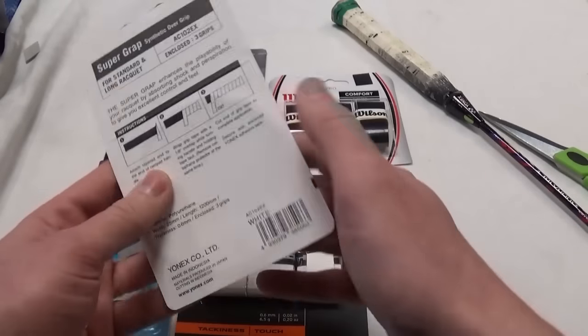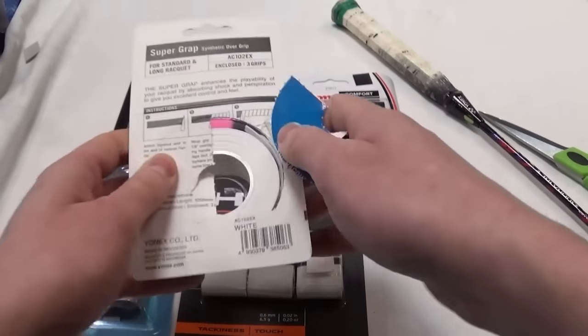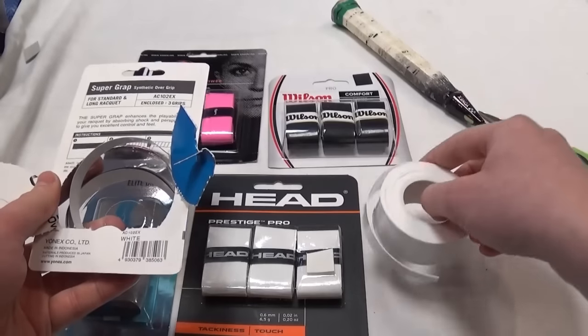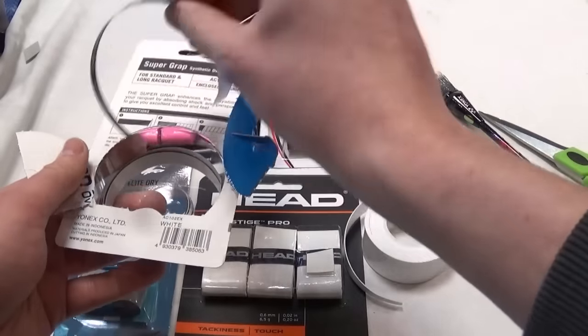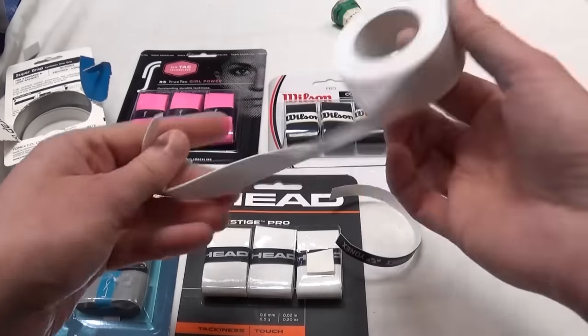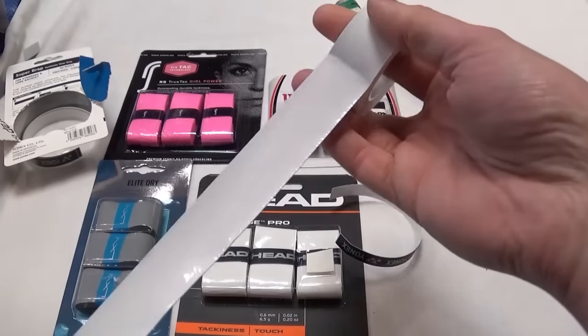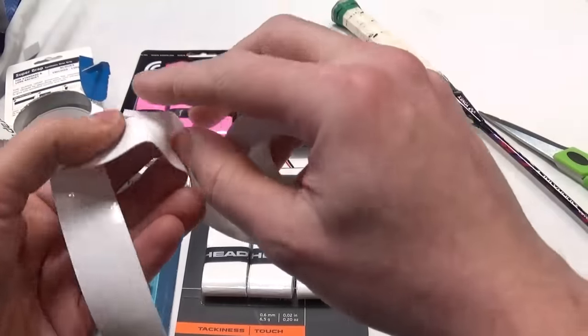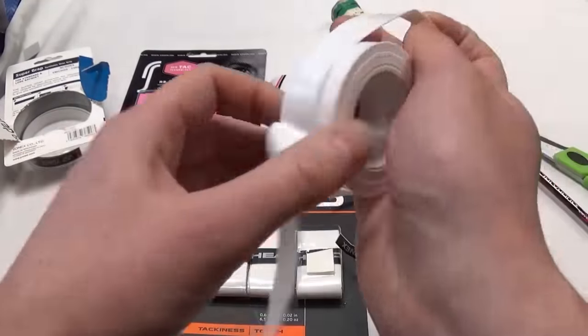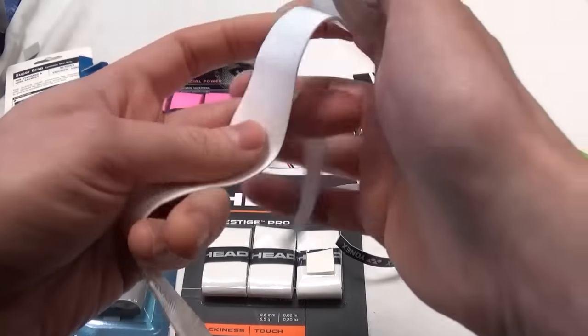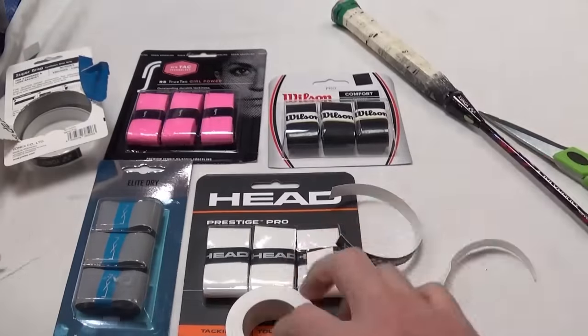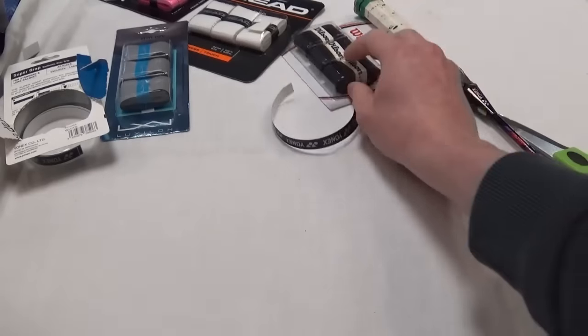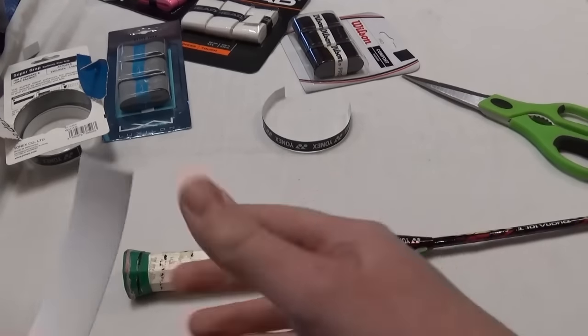So I'm just going to use the Yonex one here. Open up the packet and get them out. These come on a reel, 3 separated into individual grips. I've just got a bit of grip tape. So we're going to get one of the over grips off the reel and see where the second one starts there. Peel that away. And we're going to do the simplest over grip, just get rid of all of these and just put it straight on to the handle.